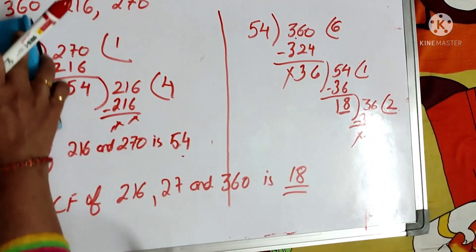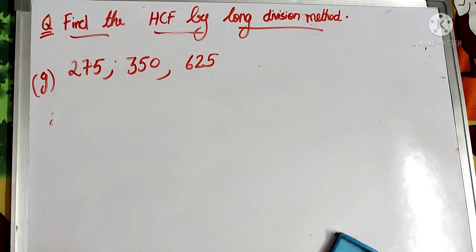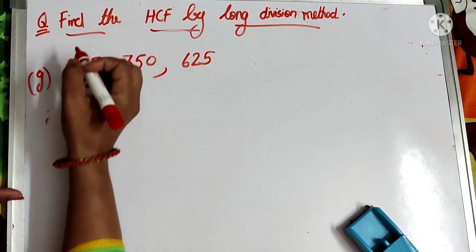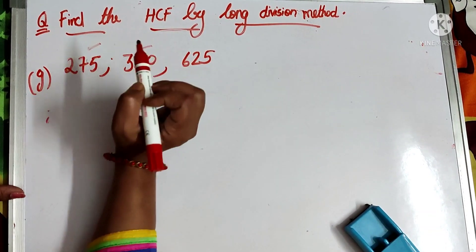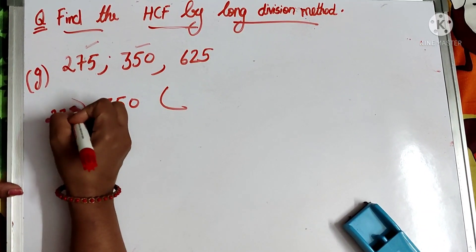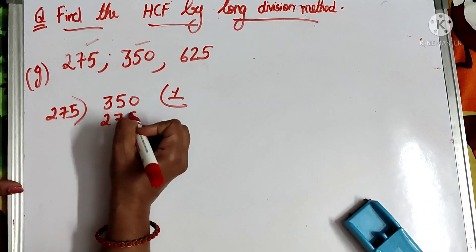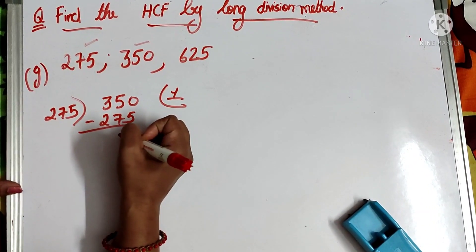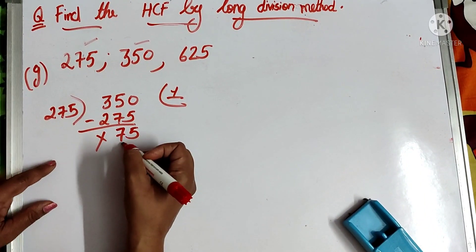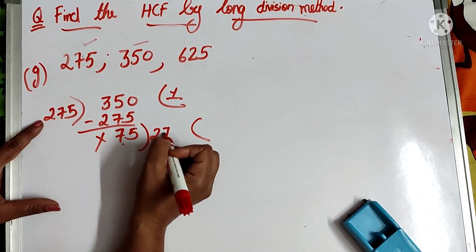One more example: find the HCF of 275, 350, and 625. The smallest number is 275 and the second greater number is 350. So we divide 350 by 275. Naturally it goes by 1: 1 times 275 is 275. The remainder is 350 minus 275 = 75. So 75 becomes the divisor and 275 becomes the dividend.